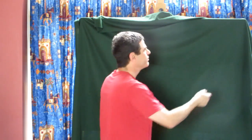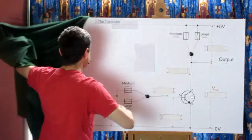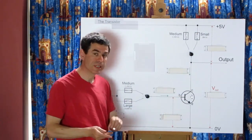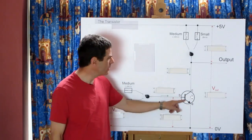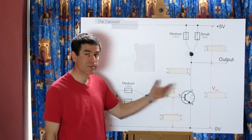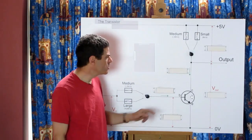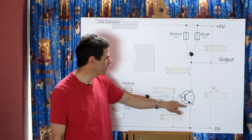A transistor is an electronic amplifier. To see it in operation we need to put it in a circuit. Here is the transistor — the circle, the bar and the arrow is the symbol we use for a transistor in a diagram. It's got three legs: collector, emitter, and base.